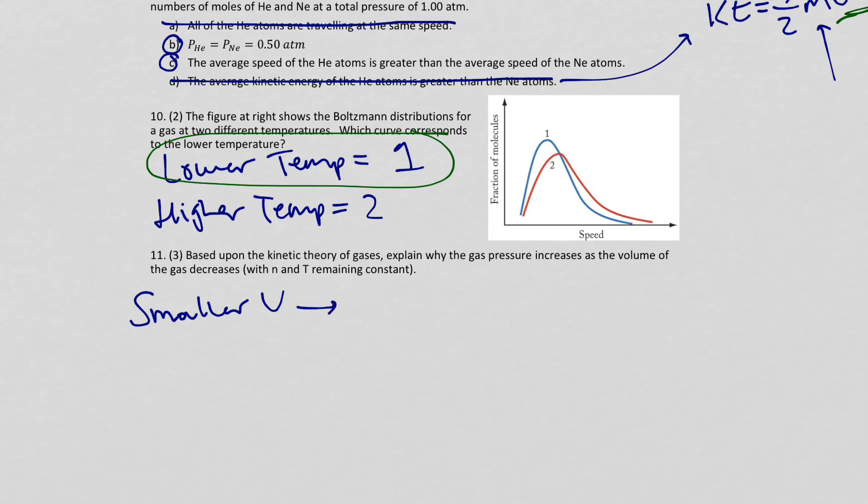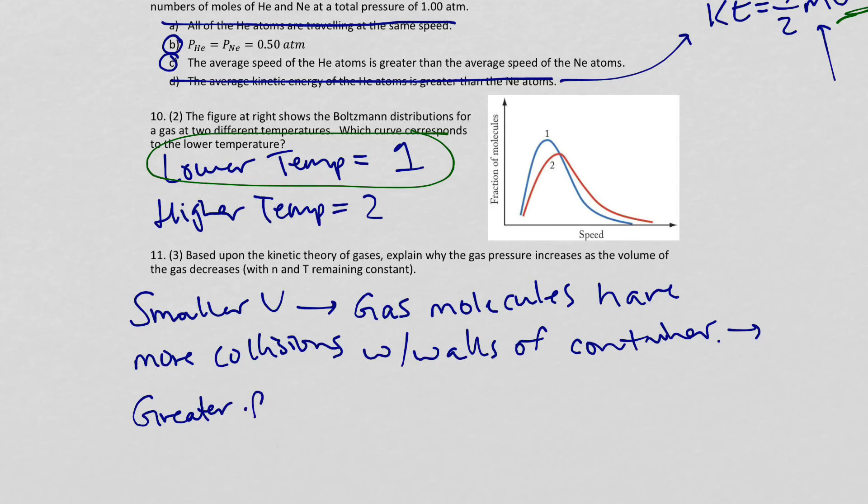If we have a smaller V, that means that gas molecules have more collisions with the walls of the container. When we have more collisions with the walls of the container, we have a greater force which equals, this is the culmination point, that means with more force comes a higher pressure. And we know that actually that is the correct conclusion.